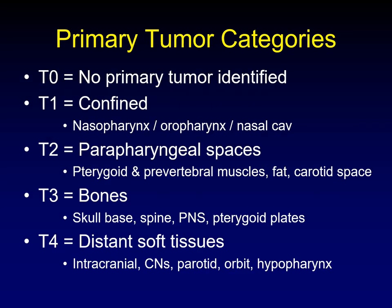Let's turn to the staging of nasopharyngeal carcinoma, starting with the primary tumor. T0 means no primary tumor is identified — the answer to how we know it's nasopharyngeal carcinoma is coming later in the lecture. T1 disease is confined to the nasopharynx, but we allow it to extend into the oropharynx or nasal cavity — those adjacent mucosal regions. Once you reach the parapharyngeal spaces — that is the pterygoid and prevertebral muscles, the parapharyngeal fat, and the carotid space — then we're T2.